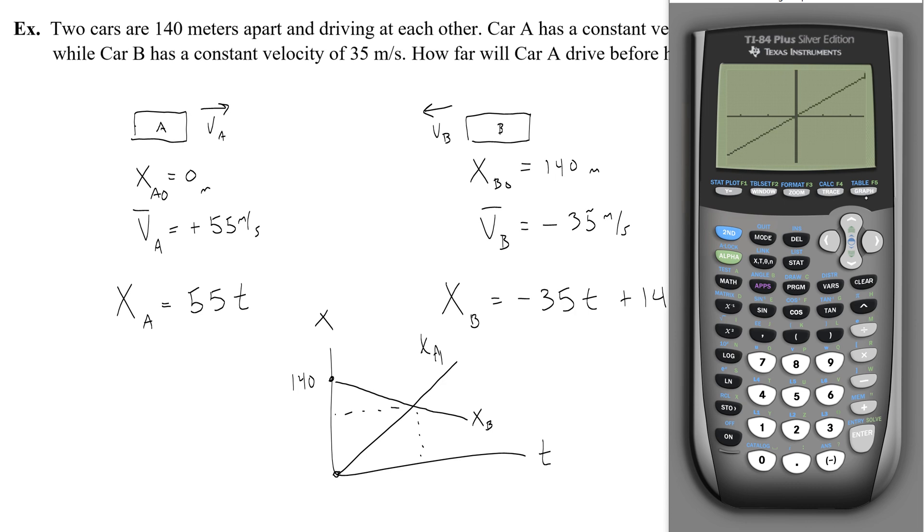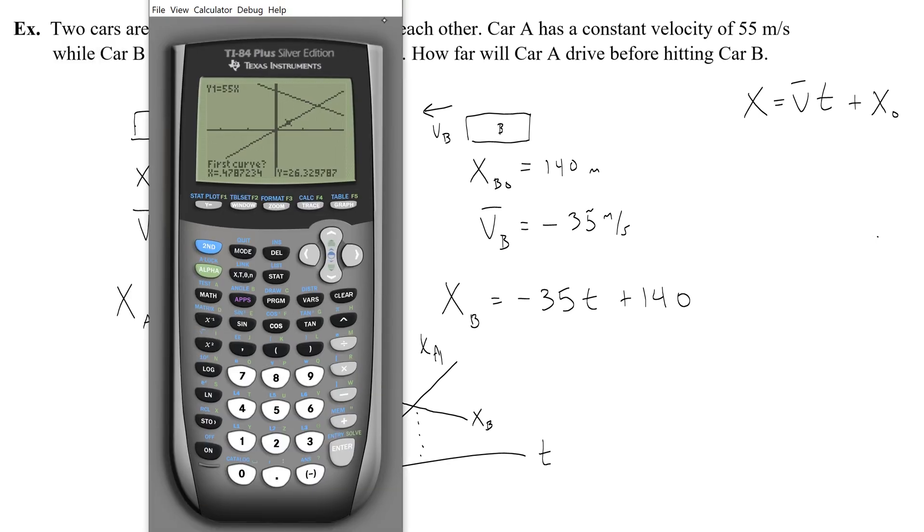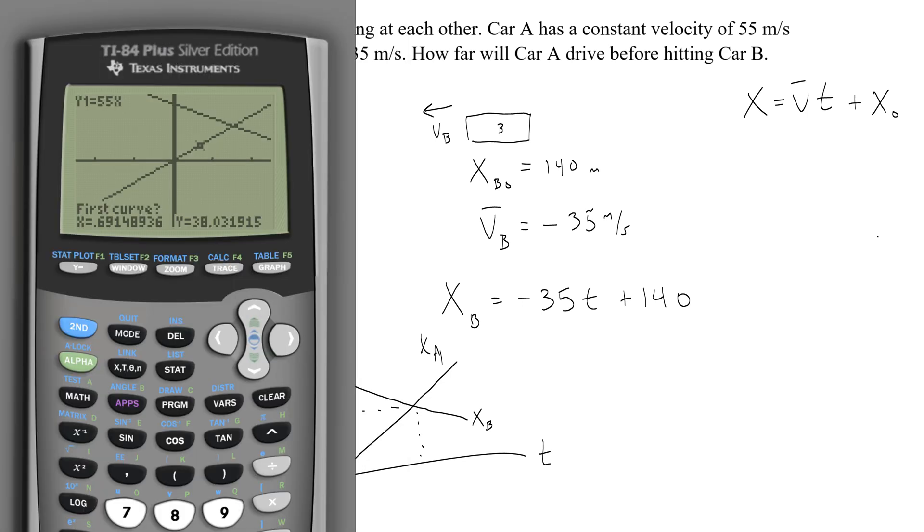Thankfully, I think the window works for this. Yeah, great. So I don't have to resize the window. I can see the intersection. I go to second trace or calc down to intersect five. The first curve is... Oh, sorry. Wow. That got weird. Let's just do it here. So don't like that.